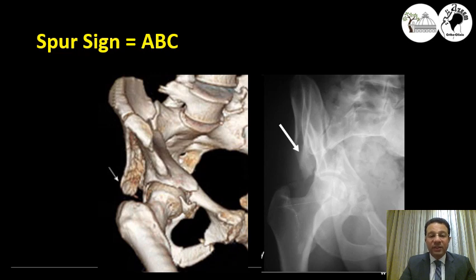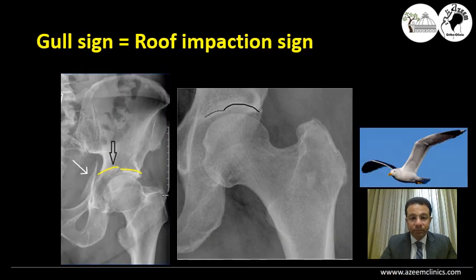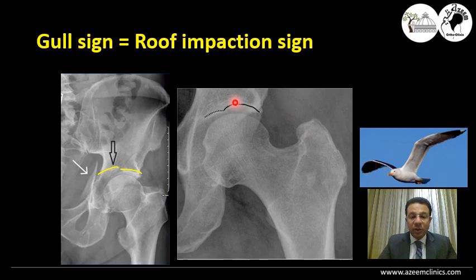Another sign seen on the obturator oblique view is diagnostic of what we name associated both-columns fracture. When you turn the patient internally 45 degrees, if the acetabulum is not connected to the main iliac crest, the acetabulum will rotate, showing a spur in the obturator oblique view — this is diagnostic for the associated both-columns fracture, or ABC. The seagull sign can be shown clearly if you have a dome impaction. If you see the seagull sign in any view, that means you have a roof impaction — the roof has been impacted and is seen at two different levels.